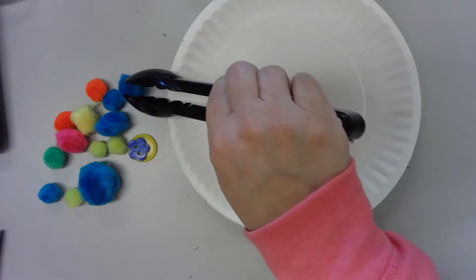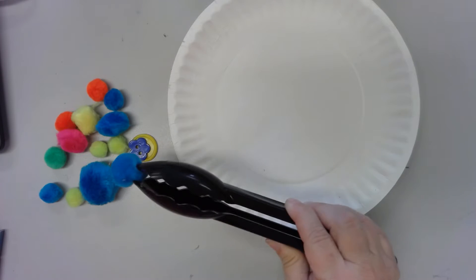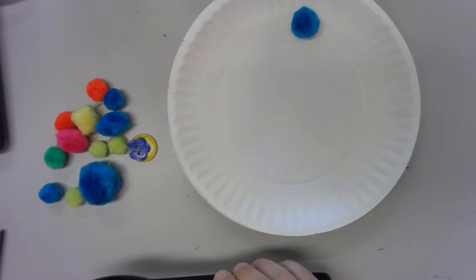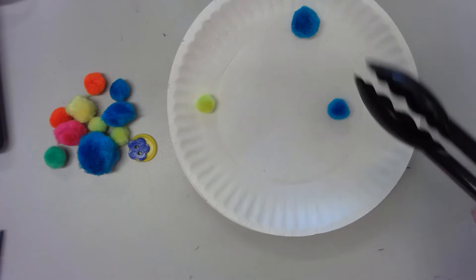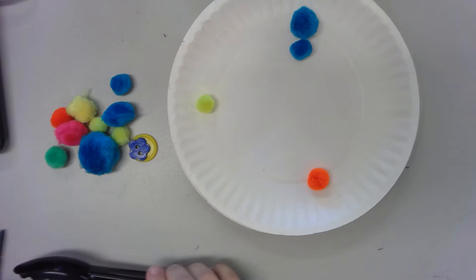What you're going to be doing is picking up the pom-poms and other things and putting them on the paper plates. You want to sort them by their color, and you can change what you're using to pick these up.